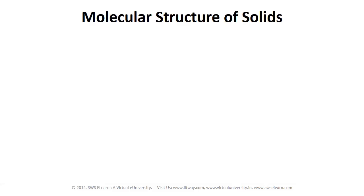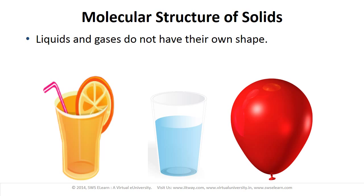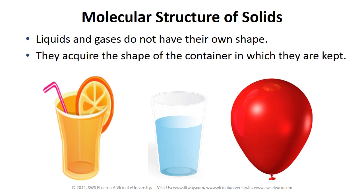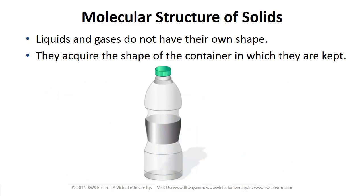As you know, liquids and gases do not have their own shape. They acquire the shape of the container in which they are kept. When you pour water in a glass, it acquires the shape of the glass, whereas when you put it in a bottle, it assumes the shape of the bottle.